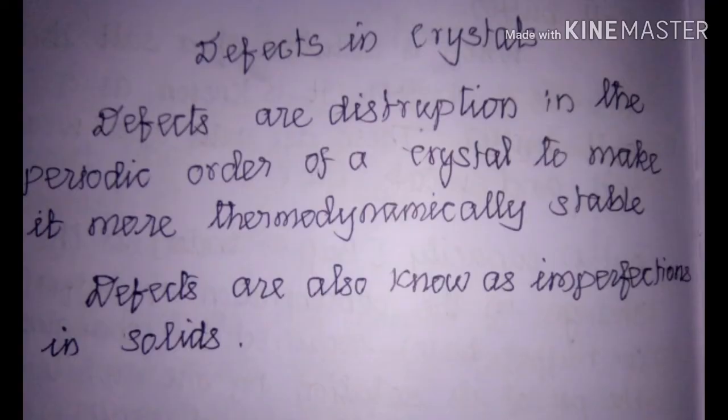Defects in crystals: the disruptions in the periodic order of the crystals are called defects. The reason for these defects is to gain more thermodynamic stability. In order to get thermodynamic stability, crystals move from orderness to disorderness to get lower energy. Defects in crystals are also known as imperfections in solids.